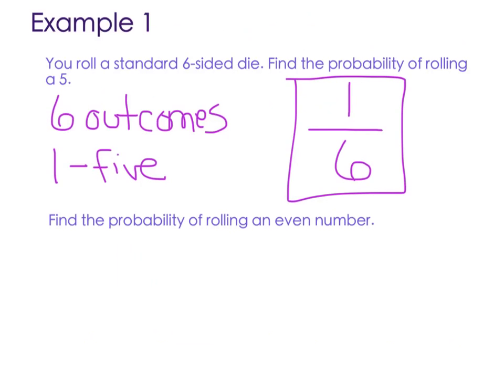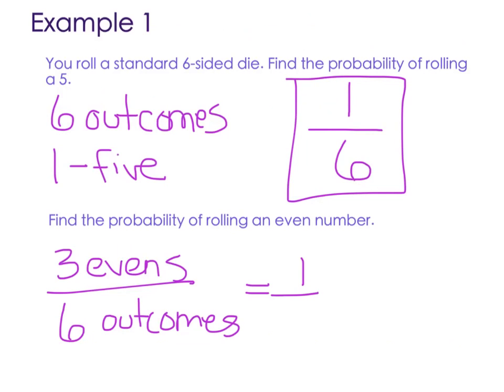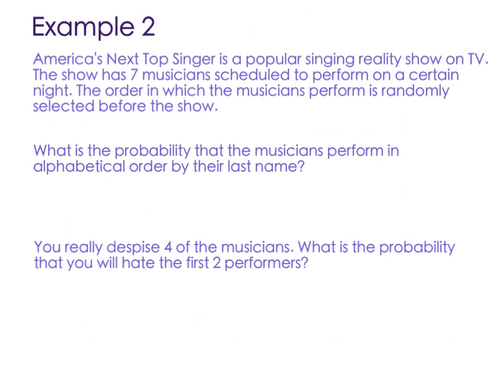Find the probability of rolling an even number. Okay, so we still have six outcomes, but three of those are even, right? The two, the four, and the six. We have three evens out of six total outcomes. Three out of six is one half, or 0.5, or 50%.